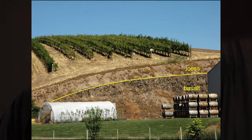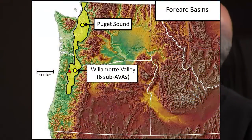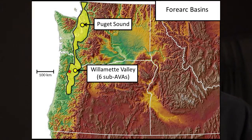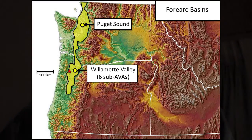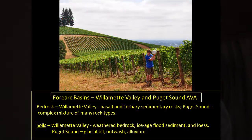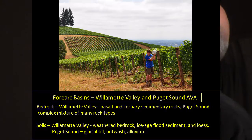Then we have the forearc basins. Puget Sound is one of those, though there's not a lot of viticulture there — that area was heavily impacted by glaciers, so most of the soils are glacial outwash or till, making it a very different environment for viticulture.